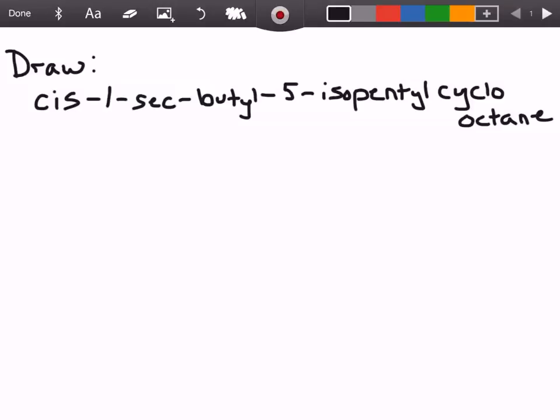So this question asks us to draw cis-1-sec-butyl-5-isopentyl cyclooctane. Now it's kind of a mouthful when you read it at first but if we break it down we're gonna find out that it's not so bad.